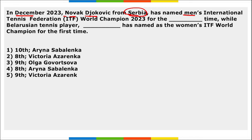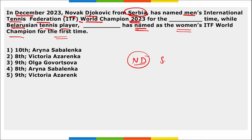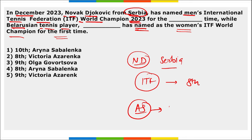In December, Novak Djokovic from Serbia has been named the men's International Tennis Federation World Champion 2023 for the eighth time, whereas Belarusian tennis player Aryna Sabalenka has been named the women's ITF World Champion for the first time. The correct option is eighth time for Novak Djokovic and first time for Aryna Sabalenka.